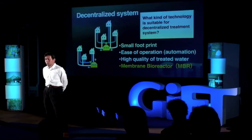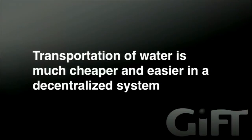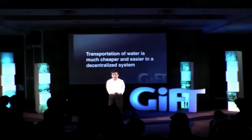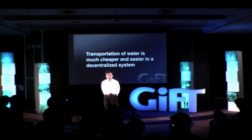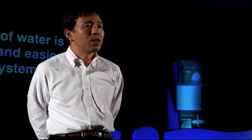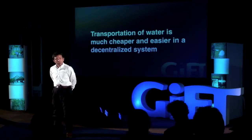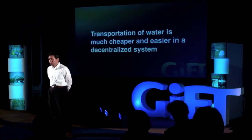Let me point out one additional advantage of this decentralized system. With decentralization, transportation of water is much cheaper and easier because the size of the wastewater collection system is very small. This means installation of the decentralized system can be very quick. This is a very important aspect for developing countries where they need to quickly improve sanitary conditions — they cannot wait a long time to install a large-scale, complicated centralized system. By using this kind of decentralized system, we can quickly install wastewater management and quickly improve sanitary conditions in developing countries.